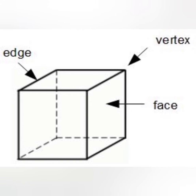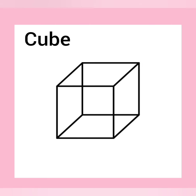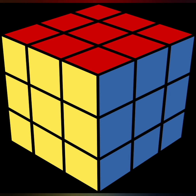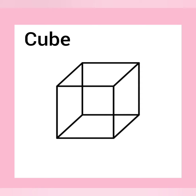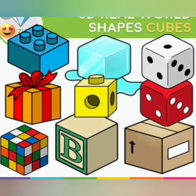Let us move to the solid shapes now. Our first shape is cube. A cube is formed when we place six equal square pieces together. You have seen a Rubik's cube — all the faces are equal in size, that is, each and every face is a square. So a cube has six equal flat faces, 12 edges, and 8 corners. You can see these examples also.